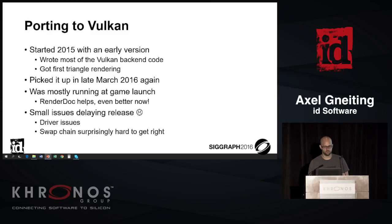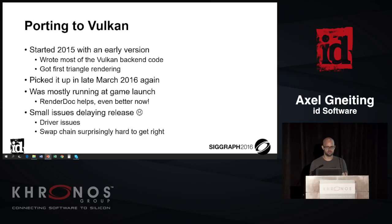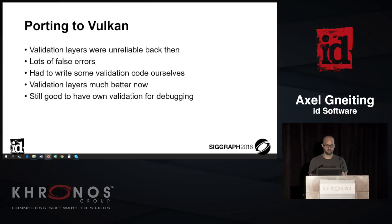Porting to Vulkan: we started in 2015 with an early version, wrote most of the Vulkan backend code, got first triangle rendering. Then we had to do some console work, so we were sidetracked. We picked it up in March 2016 again, and at game launch it was almost running — we did a demo with NVIDIA on a GTX 1080 launch. Why was it delayed for two months? Small issues with the drivers — back and forth with both IHVs. The swap chain was also surprisingly hard to get right. The validation layers were quite unreliable back then — lots of false warnings, especially with multiple command buffers and image layouts, so we had to write our own validation stuff.